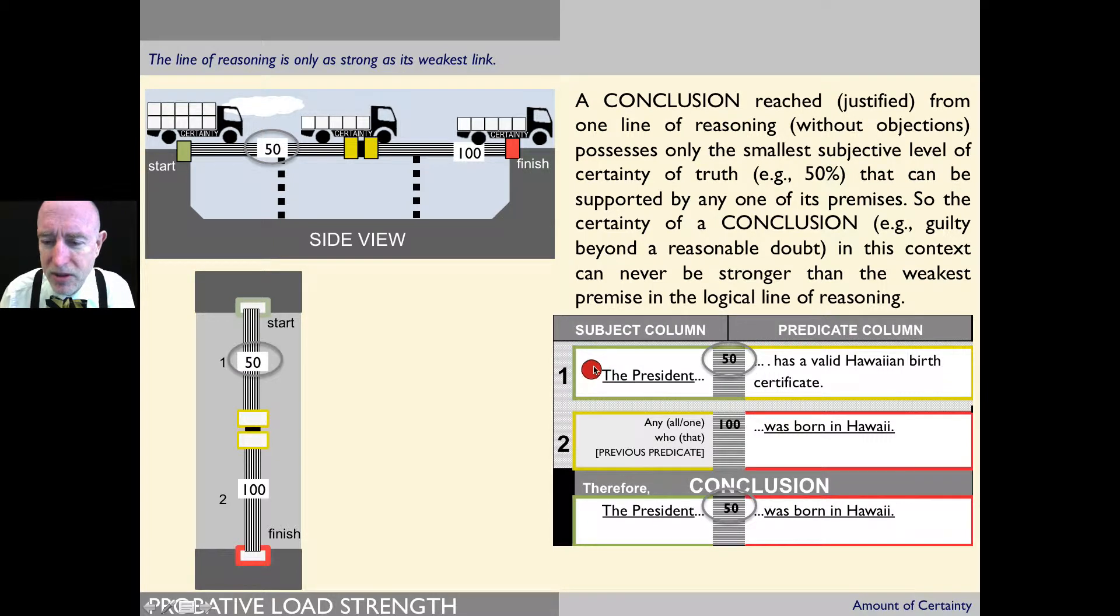Here you have the president and we've got 50% strength, 50% degree of certainty or belief. Here we have 100%, but when you get to the conclusion, it's always going to be the lowest number because a line of reasoning is only as strong as its weakest link.